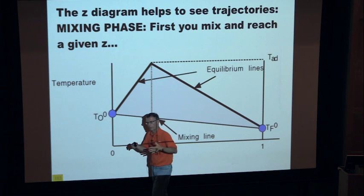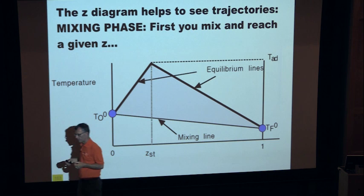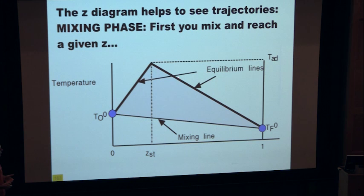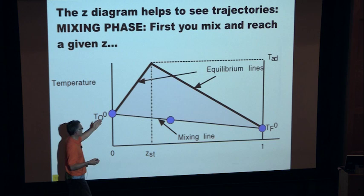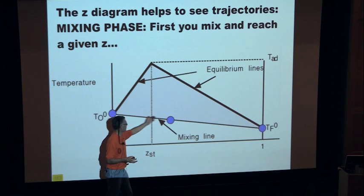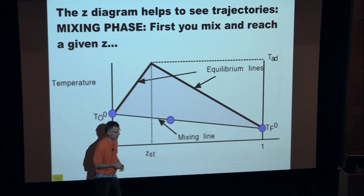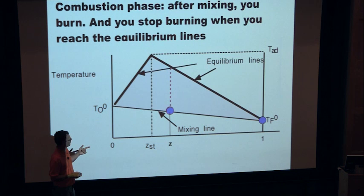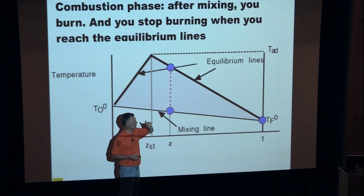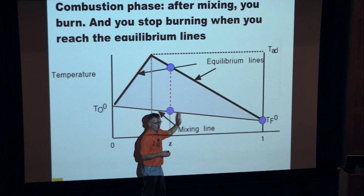There are two things you can do in a combustion chamber: you can either mix fuel and oxidizer, or you can burn them. If you mix, the amount of mixing depends on Z — for example, Z of the order of a half means half the mass comes from fuel and half from oxidizer, so you are somewhere on the mixing line. If you burn now in a premixed flame, you simply move up at a constant Z. You can also see a diffusion flame as a process where you mix first, then according to your Z value you burn.